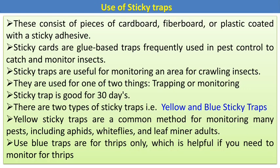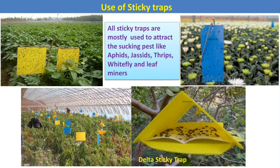The next is the sticky trap, mostly used against all types of sucking pests. It consists of a piece of cardboard, fireboard, or plastic coated with a sticky adhesive. Sticky traps are glue-based traps frequently used in pest control to catch and monitor insects, and are useful for monitoring crowding insects. They are used for trapping or monitoring purposes and are good for 30 days. There are two types: yellow sticky traps are common for monitoring pests like aphids, whitefly, and leafminer. Blue sticky traps are used specifically for thrips monitoring.